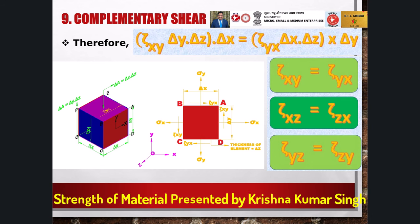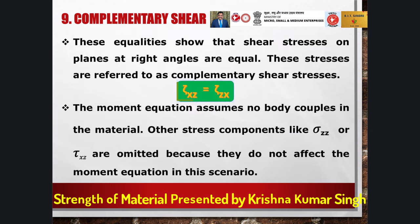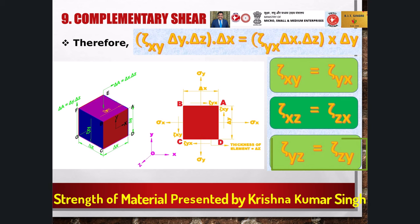It may be pointed out that the moment equation has been written under the assumption that there is no body couple in the material. Also, other stress components like sigma_zz and tau_xz are not shown in figure 1.12 because the forces corresponding to them do not contribute to the moment equation considered. It may also be emphasized that the moment has been taken of the forces, not of the stress components. In a similar way, it can be proved that tau_xz = tau_zx (equation 1.12b) and tau_yz = tau_zy (equation 1.12c). We infer that shear stresses on planes at right angles are equal and are called complementary shear stresses — for example, tau_xz is complementary to tau_zx.